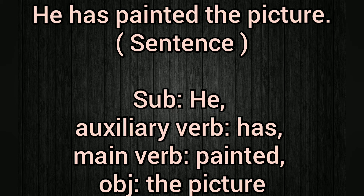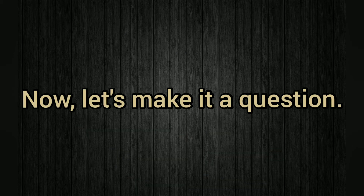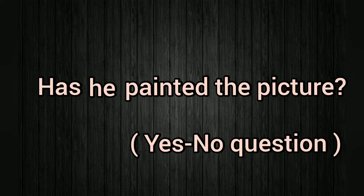Here is a sentence: 'He has painted the picture.' Here the subject is 'he', auxiliary verb is 'has', main verb is 'painted', and the object is 'the picture'. Now let's make it a question. First comes the auxiliary verb 'has', then the subject 'he', then the remaining part 'painted the picture'. This is a yes/no question.